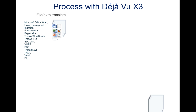First, the workflow. This is the process with Deja Vu X3. First you have the files you want to translate. A lot of files can be imported directly in Deja Vu X3. If you want to know what kinds of files you can translate, they are not all listed here — there are many more — you can go on our website where you can see all the formats supported.